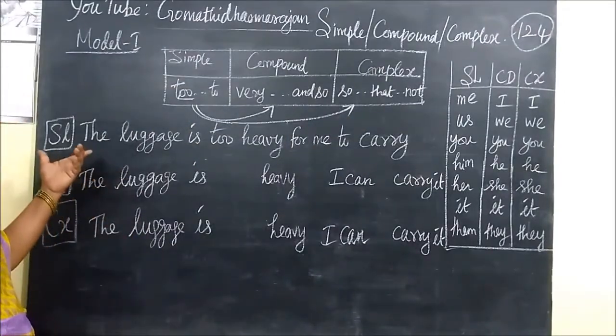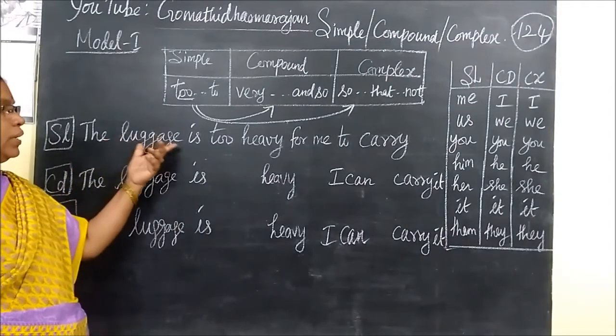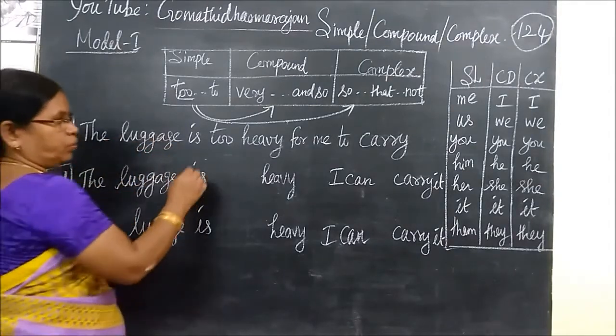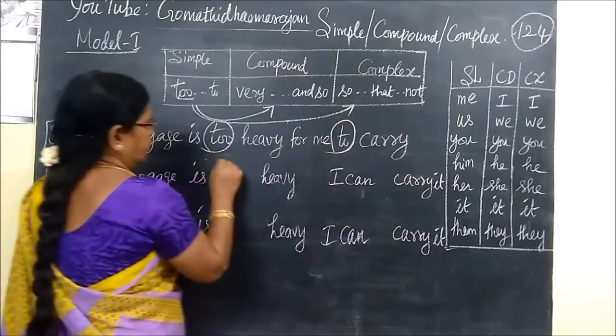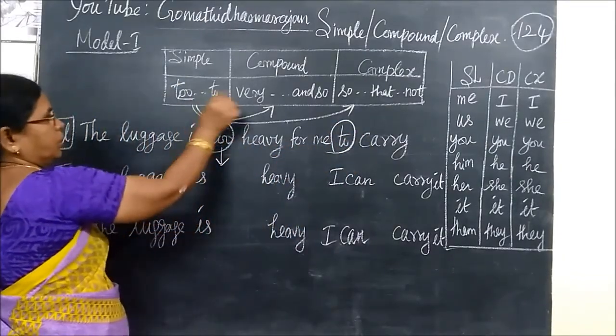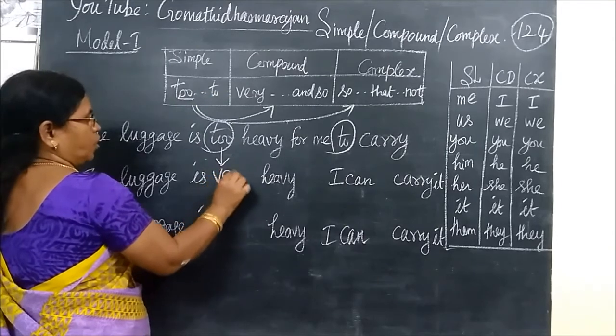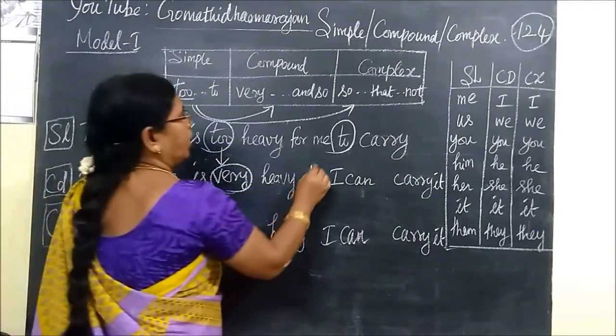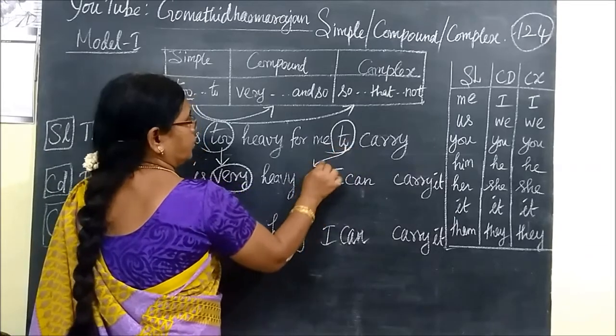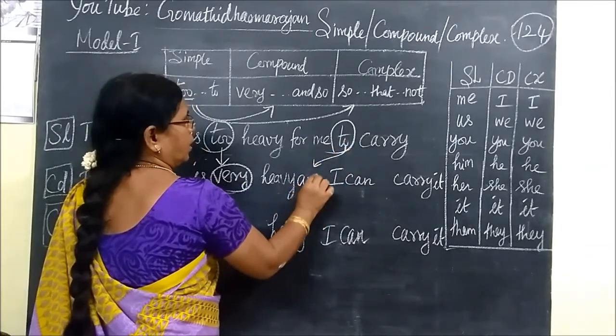So the luggage is too heavy for me to carry. In the 2, in the 2 scenario what you are writing, very. For compound sentence, you just write very and in the 2 editors, you write and so.